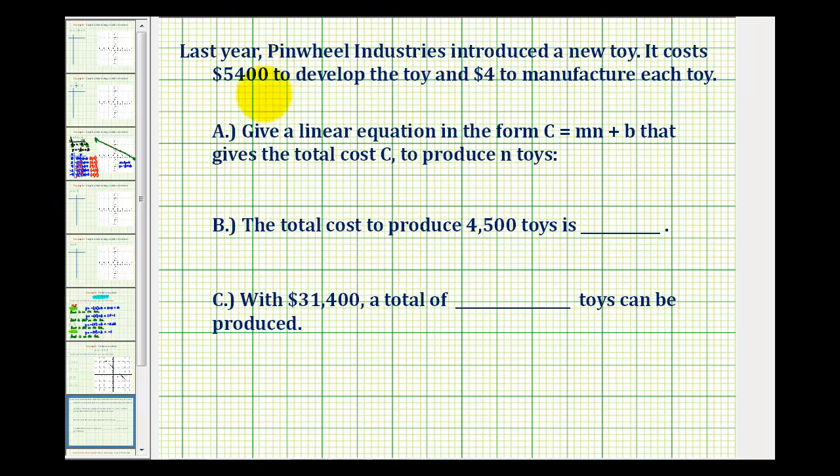It cost $5,400 to develop the toy and $4 to manufacture each toy. We want to give a linear equation in the form of C equals M times N plus B that gives a total cost C to produce N toys.